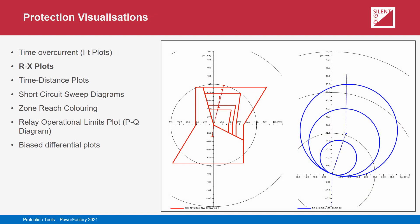RX plots are used with distance protection, representing the tripping characteristics of distance relays on a resistance versus reactance plane. The impedances of the protected lines and equipment can be shown on the same diagram. When calculations or simulations are carried out, the line-to-line and line-to-ground fault loops calculated by the relay's polarizing blocks can be illustrated and compared to the tripping characteristics. For simulations, it is possible to plot the impedance trajectory that occurs during a disturbance, which is particularly useful for examining power swings and out-of-step and power-swing blocking relays.